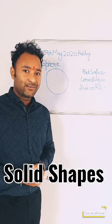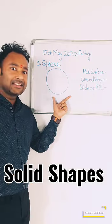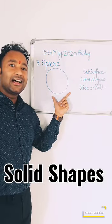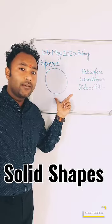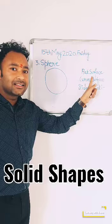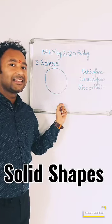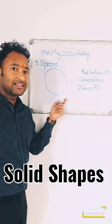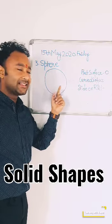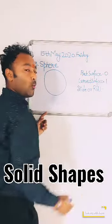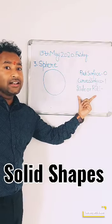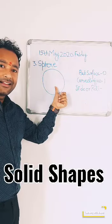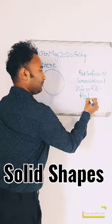The next shape is sphere. Can you look at this and tell me — is it a round surface or a flat surface? It is a round, or curved, surface. How many flat surfaces are in a sphere? Zero. And how many curved surfaces are there in a sphere? There is one curved surface. So this will roll.